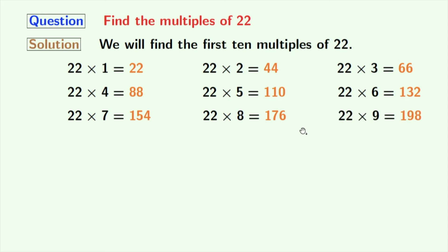If we multiply 22 with 9, we get 198. If we multiply 22 with 10, we get 220.